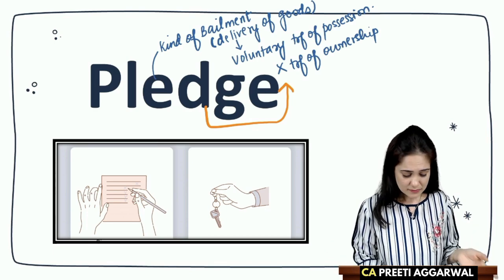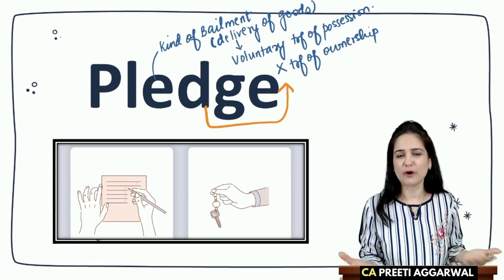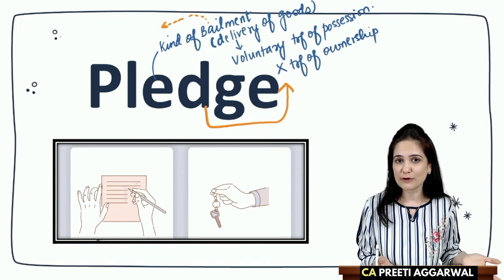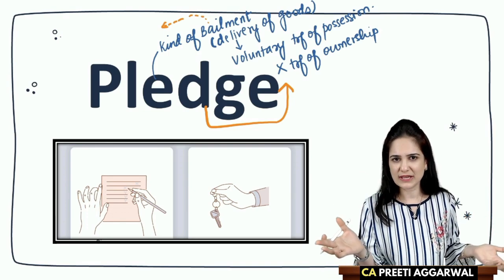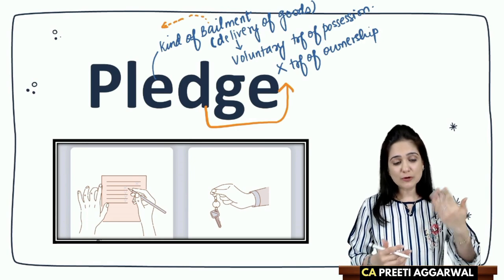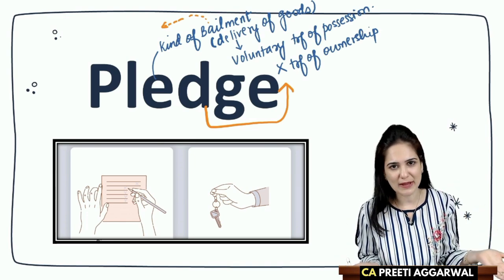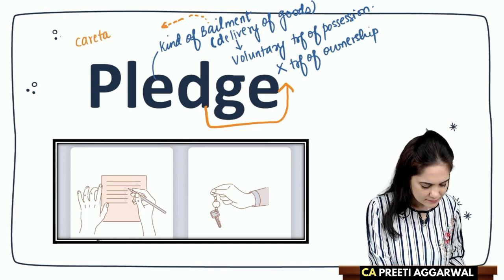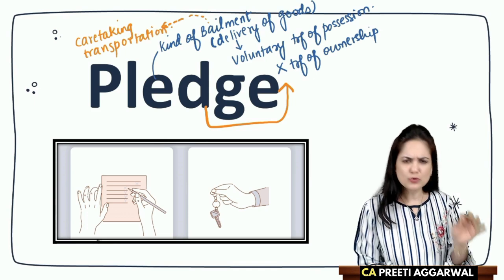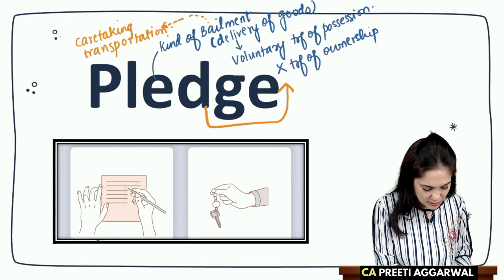What is the difference between bailment and pledge? In pledge we don't just deliver the goods — we deliver the goods as security for a loan or maybe performance of a contract. In bailment, the main purpose is caretaking or transportation, or using the goods as per the instructions of the bailer. But in case of pledge, the purpose is very clear: we are delivering the goods as security.